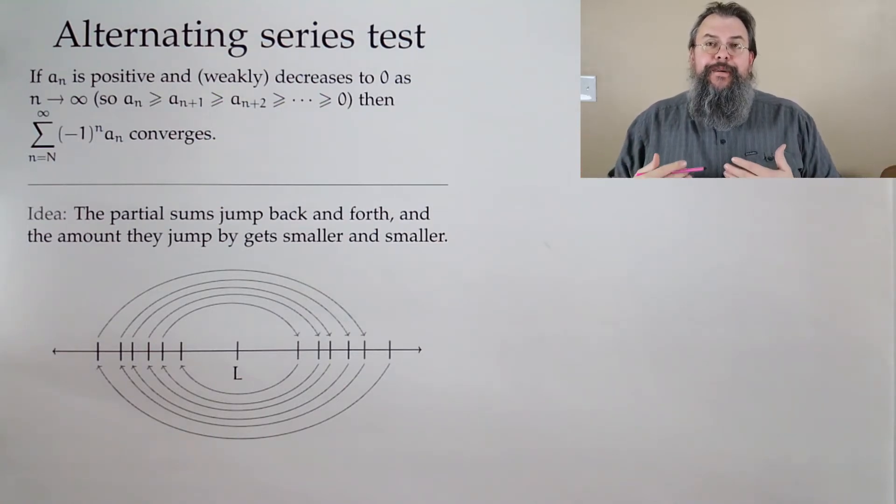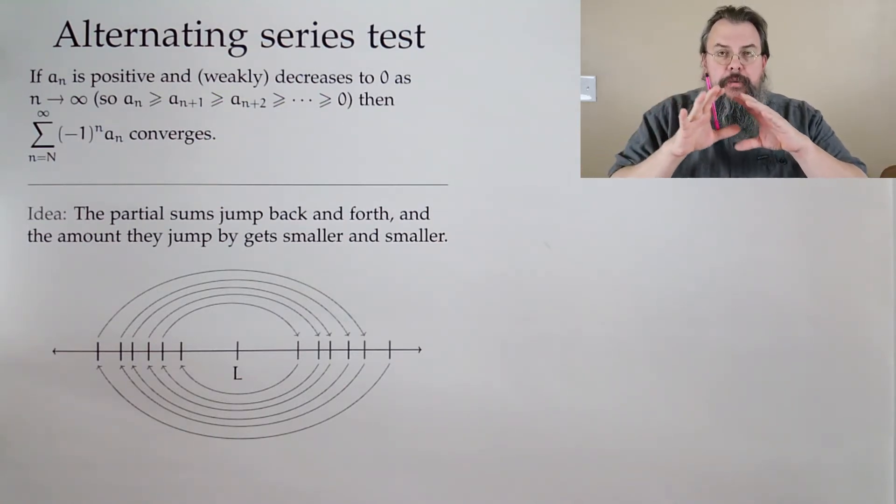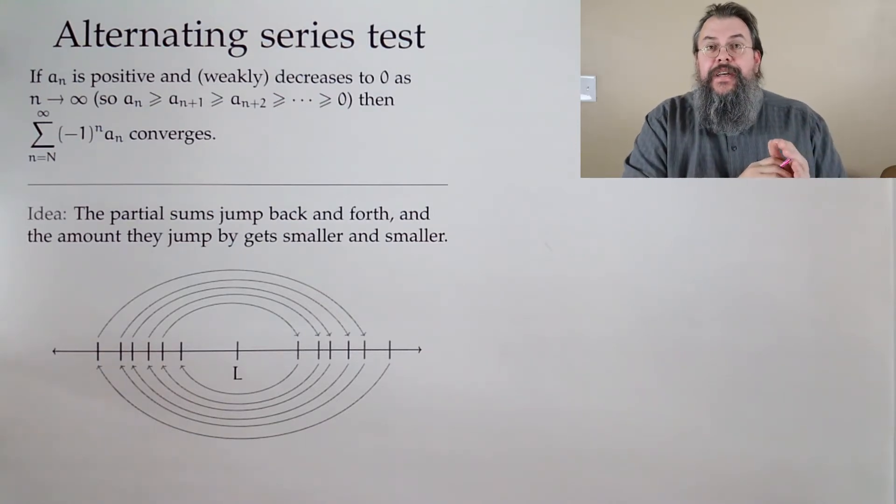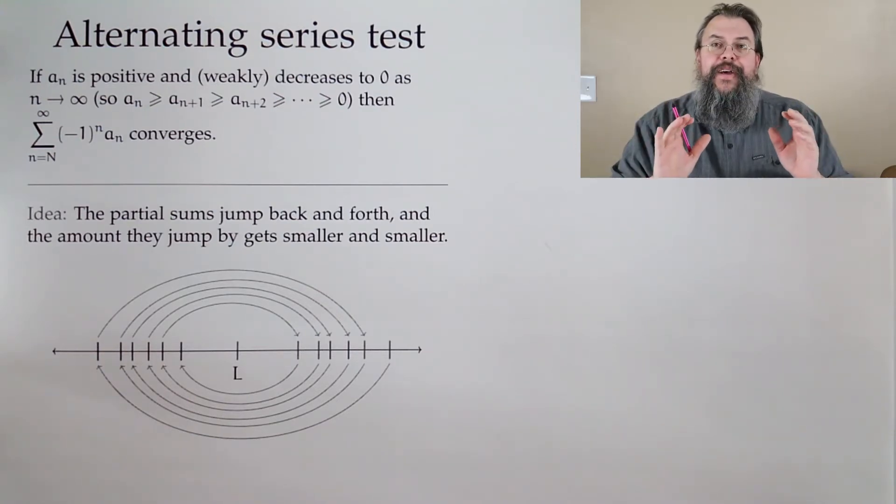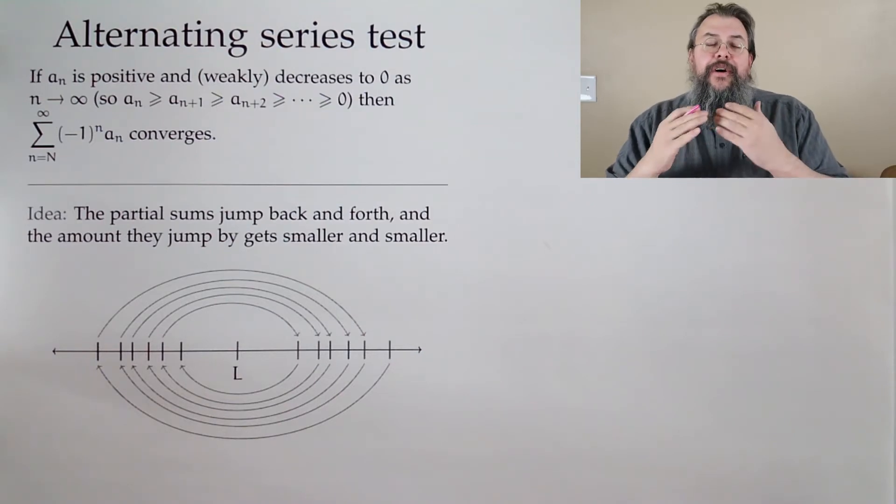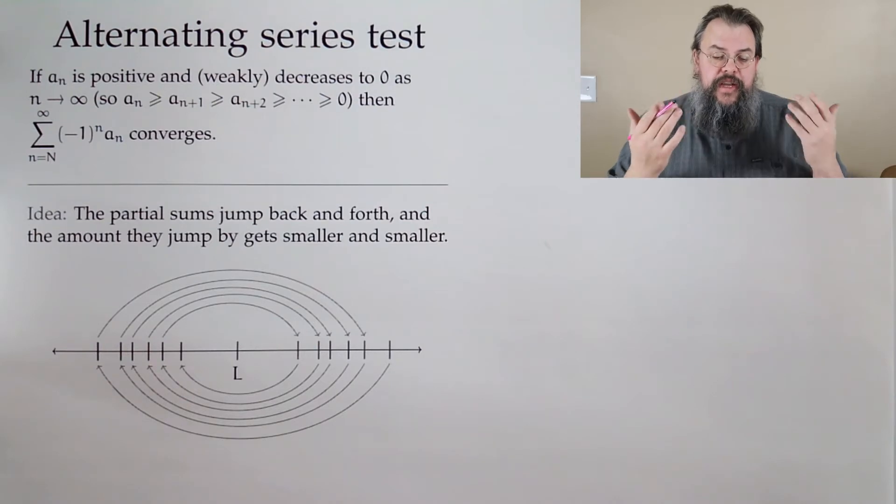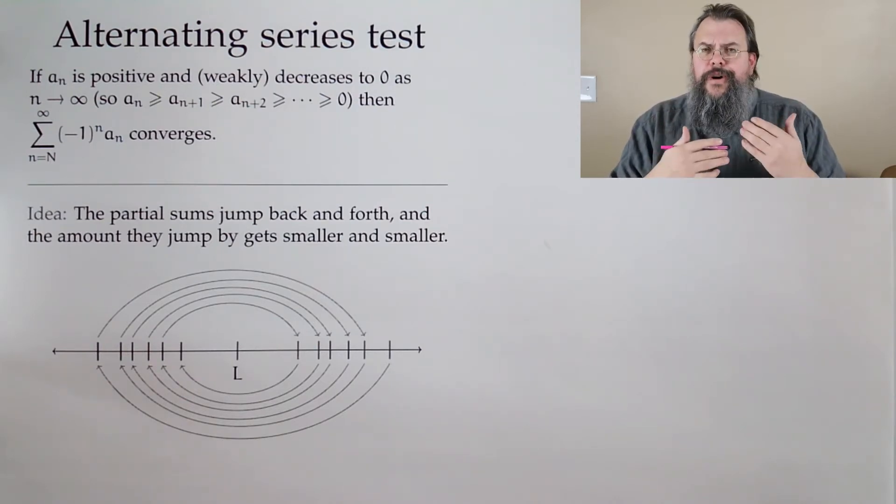Normally when we talk about convergence, it's like, well, okay, we're going to zero, but how quickly are we going to zero? And for us, we're like, yeah, we don't care about that anymore. As long as we go to zero, it's enough. So, it's kind of surprising how simple this test is. So, what's the idea? Why does it work?